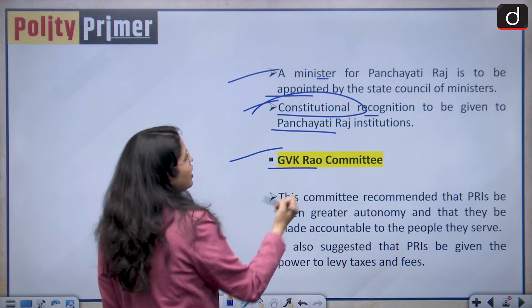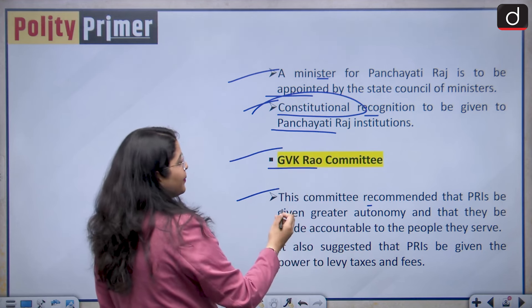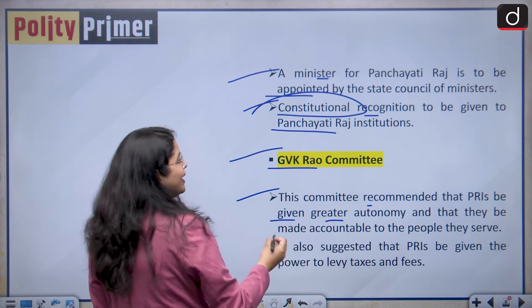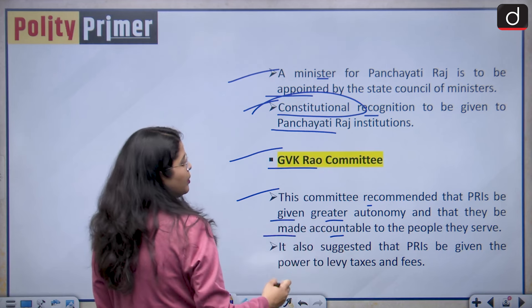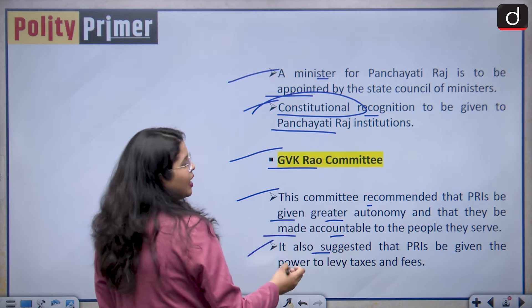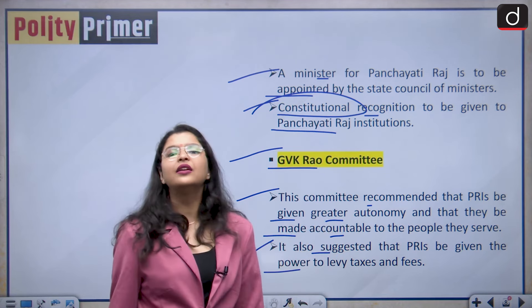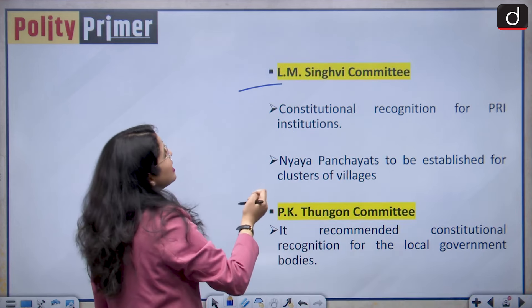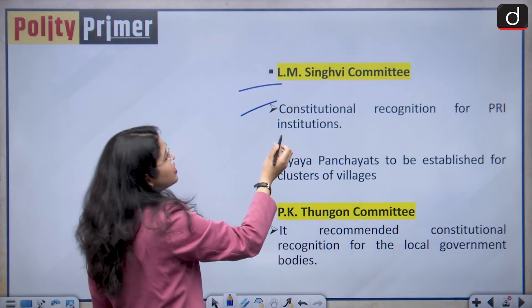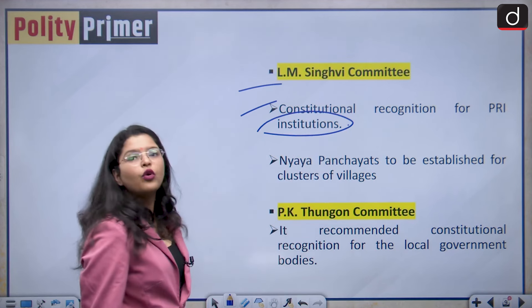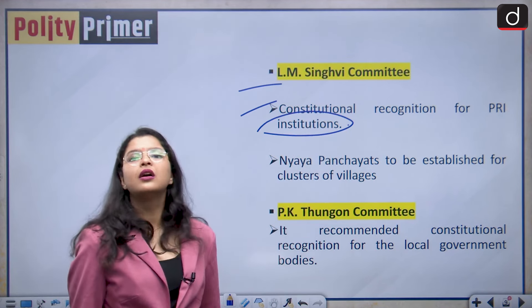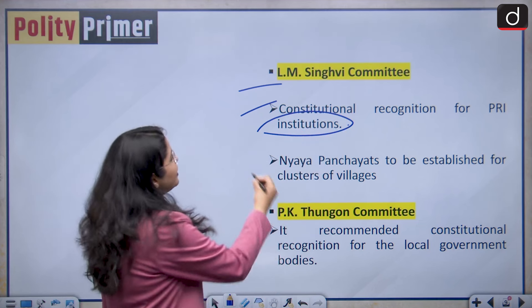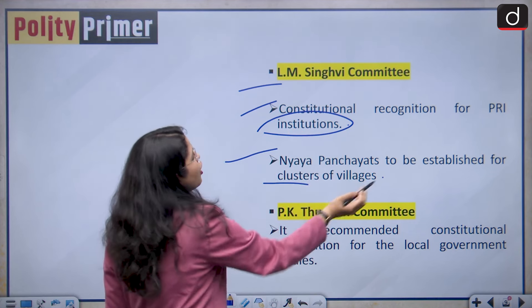Then came the GVK Rao committee. This committee recommended that Panchayati Raj institutions be given greater autonomy and be made accountable to the people they serve. It also suggested that PRIs be given the power to levy taxes and fees. Moving forward to the L.M. Singhvi committee — constitutional recognition for PRI institutions was again suggested by this committee as well, apart from the Ashok Mehta committee. Then Nyai Panchayats were to be established for clusters of villages.